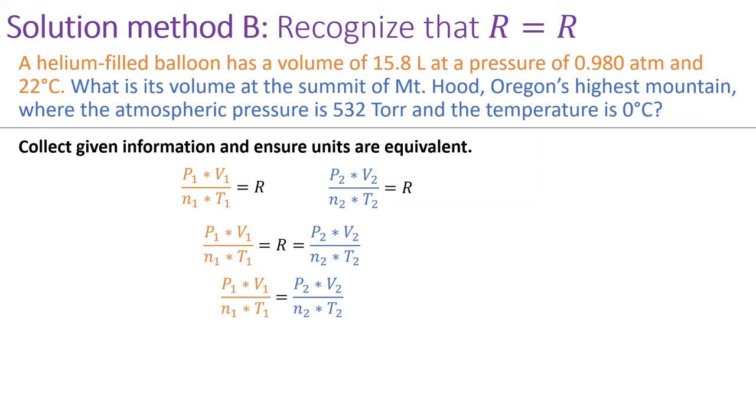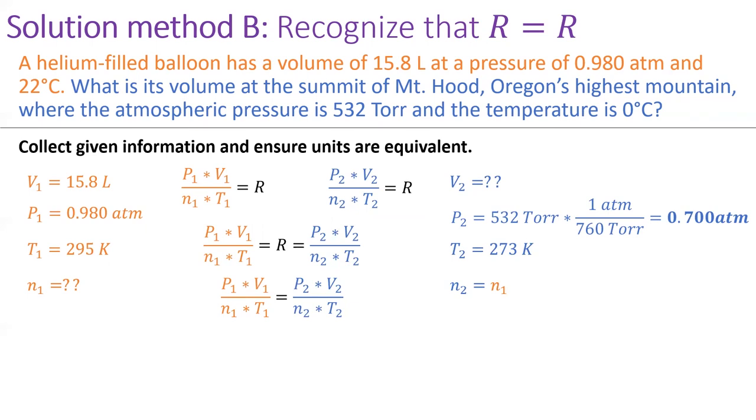At this point, I gather the given information from the problem text. I start with the initial conditions in orange. Notice that the number of moles is unknown currently. Then gather the information for the final conditions in blue. I'll have to convert pressure from torr to atmospheres so that the units match the units on the left. And although we still don't know the number of moles n, we know that it hasn't changed from the initial conditions. So I set n2 equal to n1.